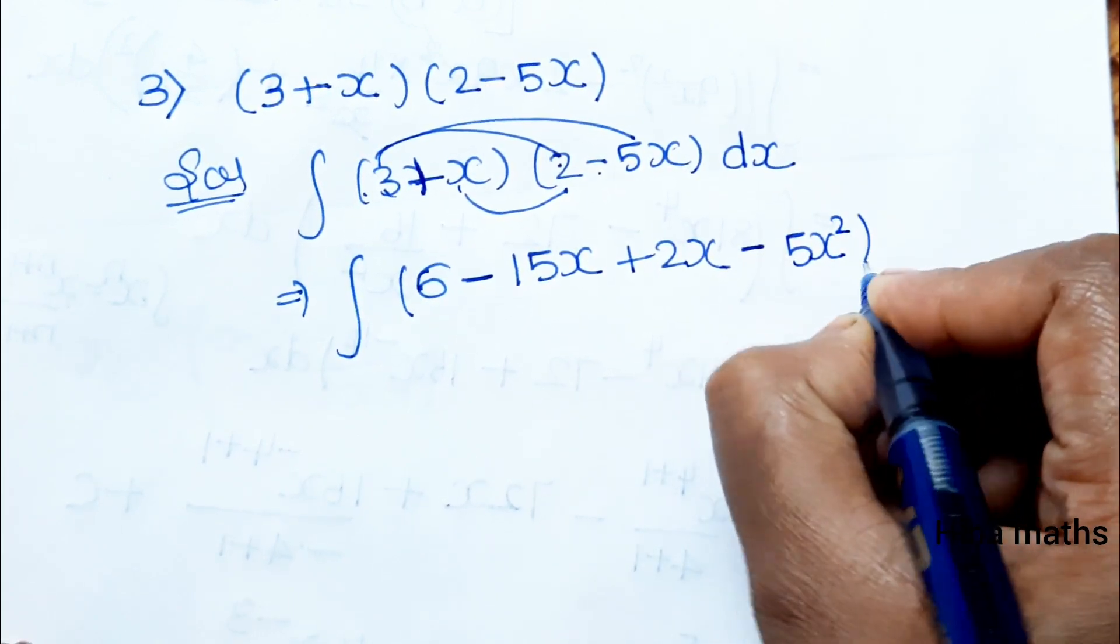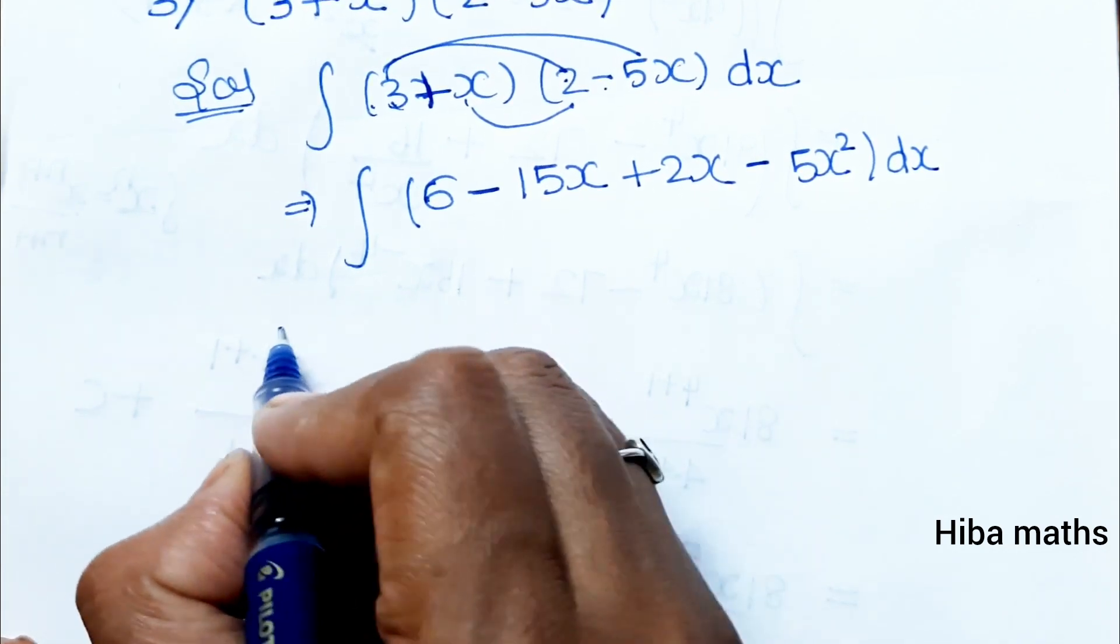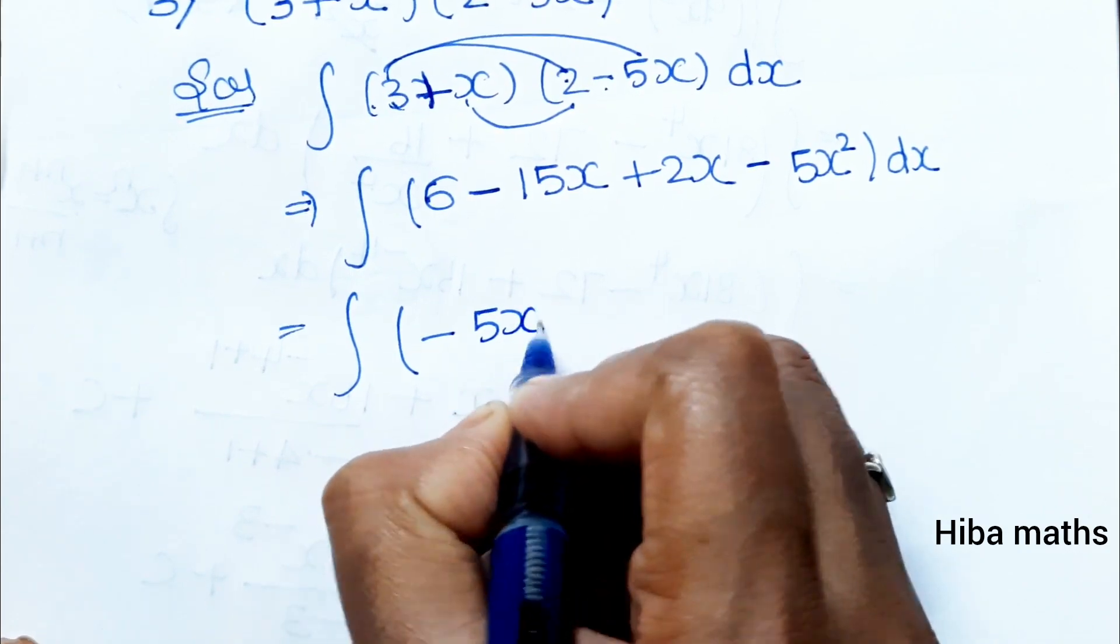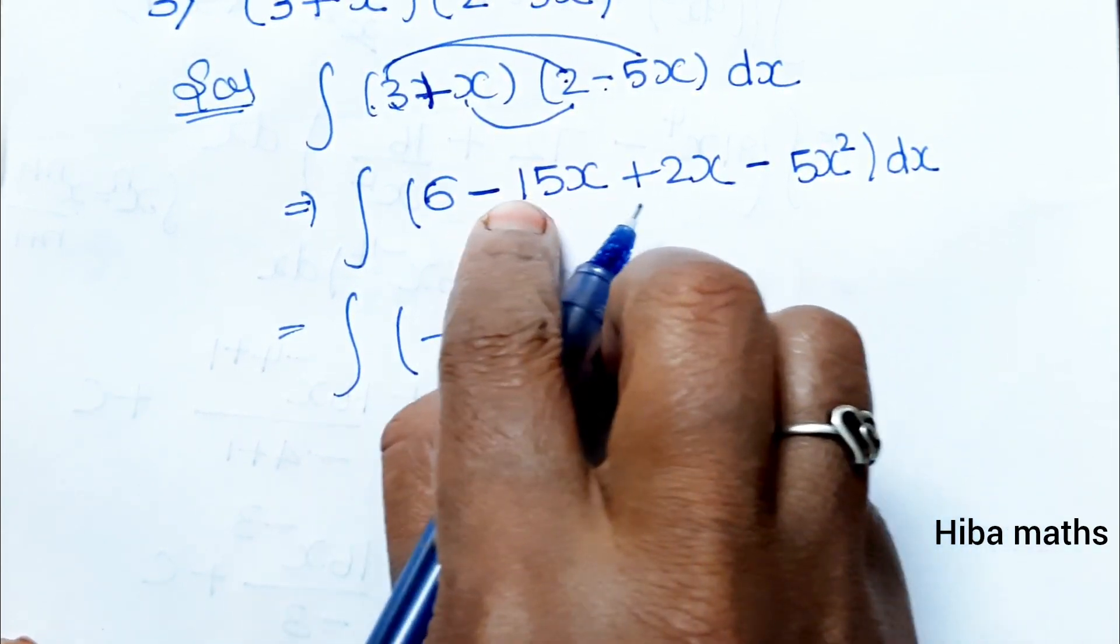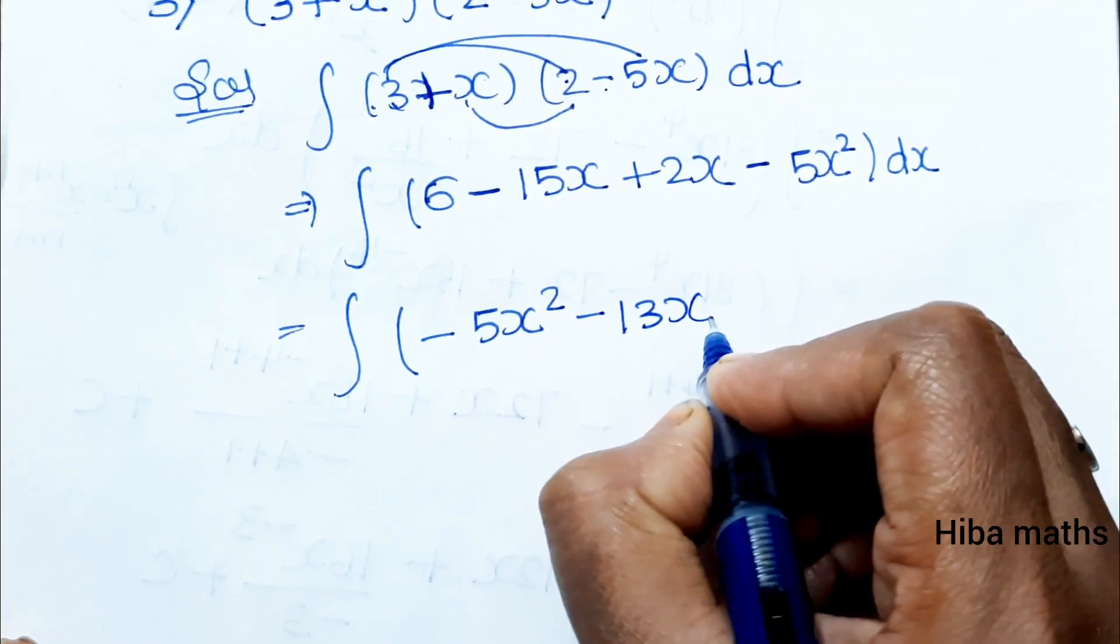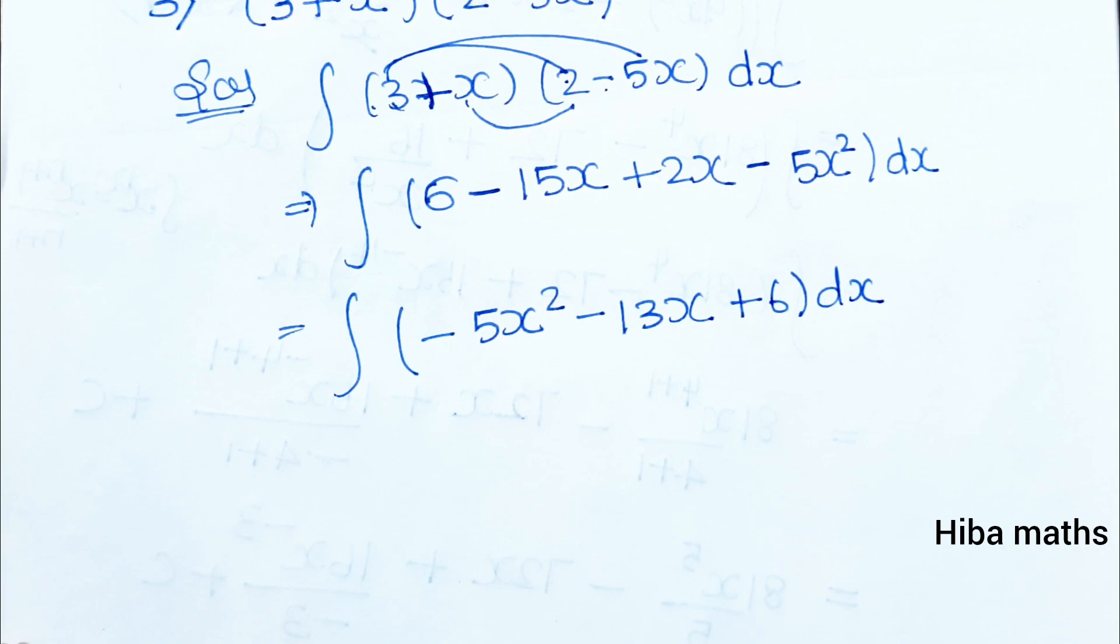Integration of -5x² - 15x + 2x + 6 dx. Now we will combine like terms: ∫(-5x² - 13x + 6) dx.